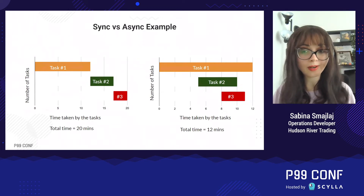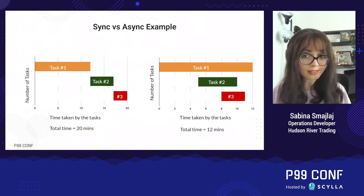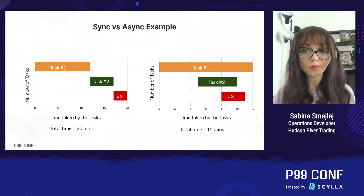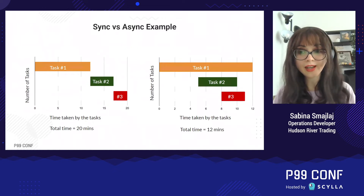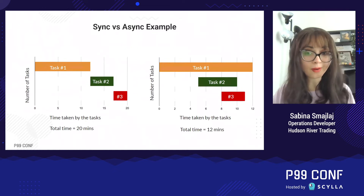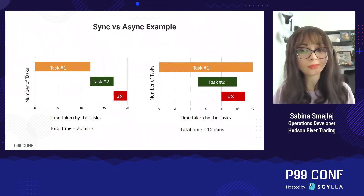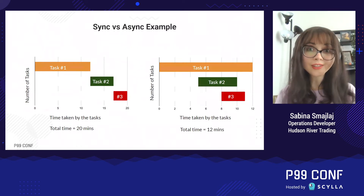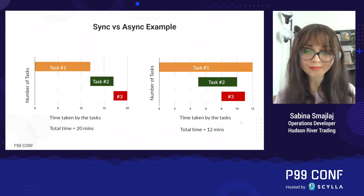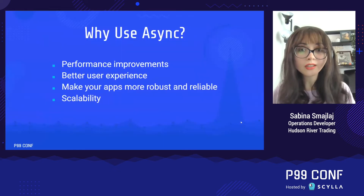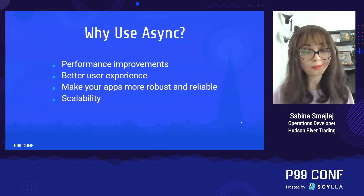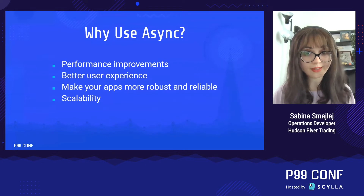If you completed this process asynchronously, you would start the chicken. While waiting for the chicken to be finished, you would start the broccoli. While waiting for the broccoli to be finished, you would start the tomatoes. You could finish everything in 12 minutes instead of 20. As you saw, using async can provide big performance improvements.